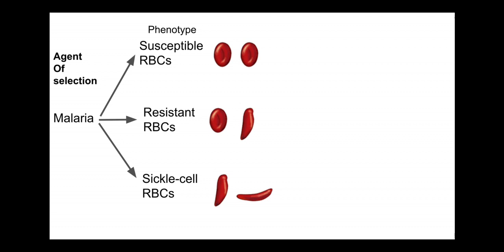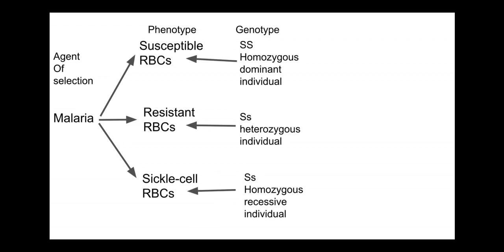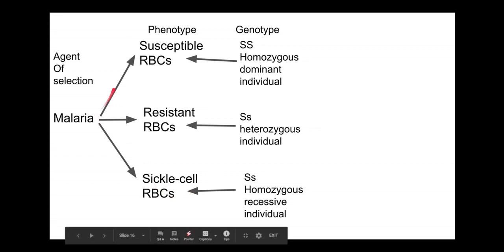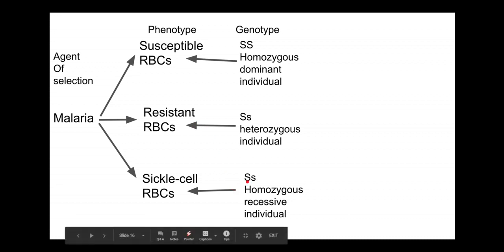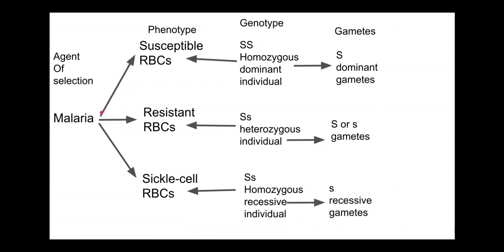Malaria can also be considered the filtering mechanism. Malaria has a relationship that varies with each type of red blood cell phenotype. Each red blood cell phenotype is caused by a different genotype. We have arrows going from the SS homozygous to susceptible RBCs, and from the SS heterozygous to resistant RBCs. The homozygous recessive — little s little s — causes sickle cell disease. Central to the biology is that the genotype creates a phenotype, which is what actually interacts with the agent of selection.